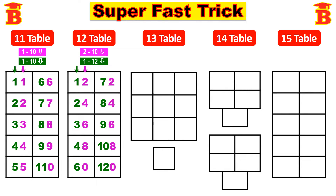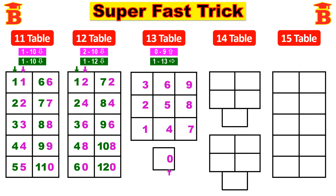Next let us write the 13th table. First step: write the numbers 0 to 9 from bottom. See the arrow mark and enter 0, 1, 2, 3, 4, 5, 6, 7, 8, 9. Second step: write the numbers 1 to 13 in a horizontal way. See the arrow mark — horizontally write 1, 2, 3, then skip one number and take the next, which is 5. So after 3, skip 4 and take 5, 6, 7, skip 8 and take 9, 10, 11, then skip 12 and take 13.